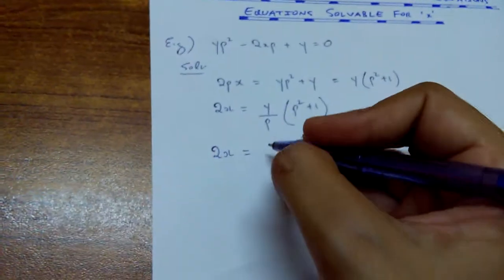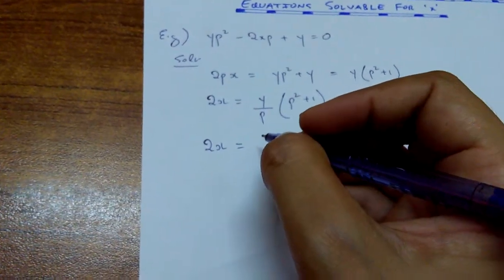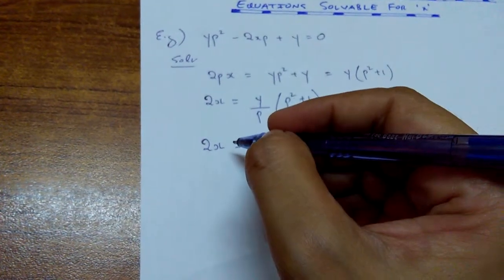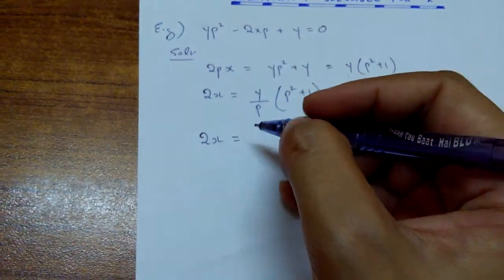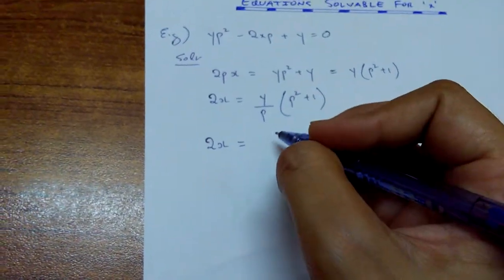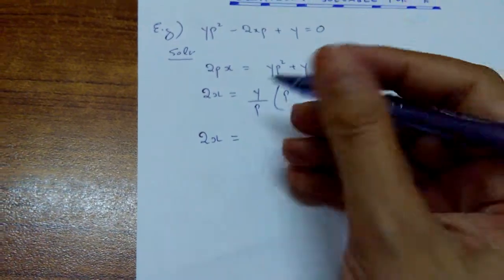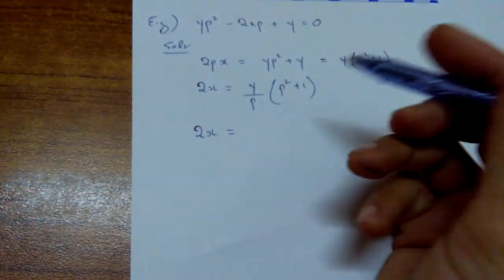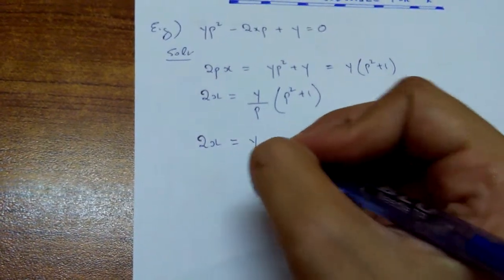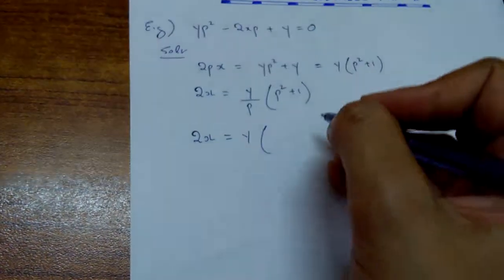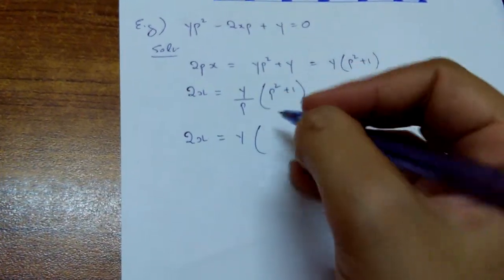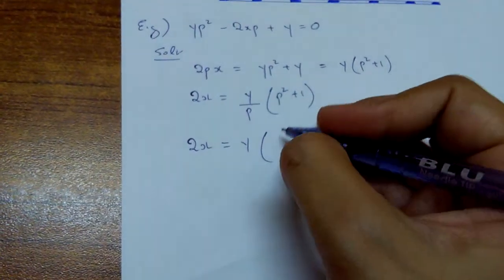So now, this equation is solvable for x. Apparently, it looks that here, this equation is representing x as a subject. So x is a dependent variable and y is an independent variable. Basically, it's not. Behind the curtain, it is not like that. But in order to solve such kind of equations, you just try to differentiate this equation with respect to y. So, that's what we are going to do now.